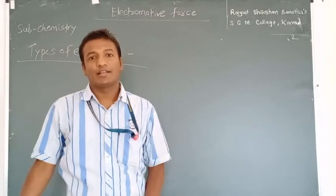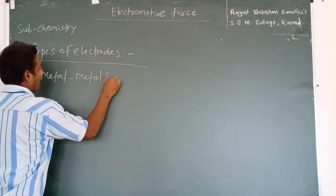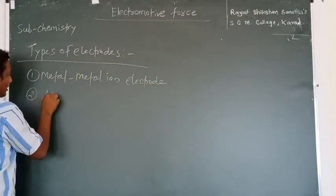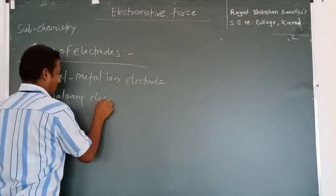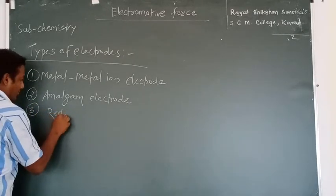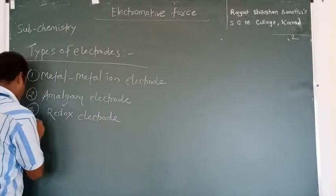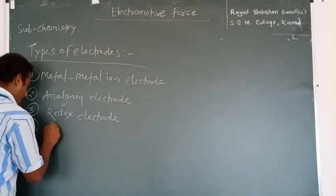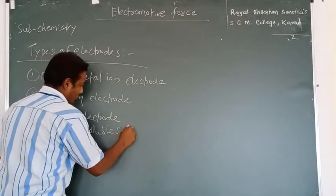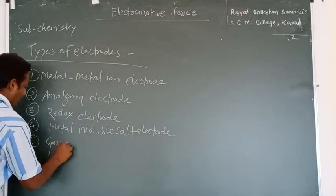The first one is metal-metal ion electrode. The second one is amalgam electrode. The third one is redox electrode, or you can say oxidation-reduction electrode. The fourth one is metal insoluble salt electrode. The fifth one is gas electrode.